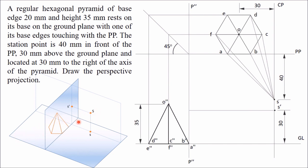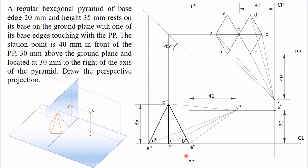When you look from this side, the station point will be at a distance of 40 mm from the picture plane. So from the picture plane this distance is 40 mm — mark this point as S double dash. Height is 30 mm and distance is 40 mm. Once you get this side view of the station point, do the same thing you did with the top view: join S double dash with all corner points and get intersection points with the picture plane.